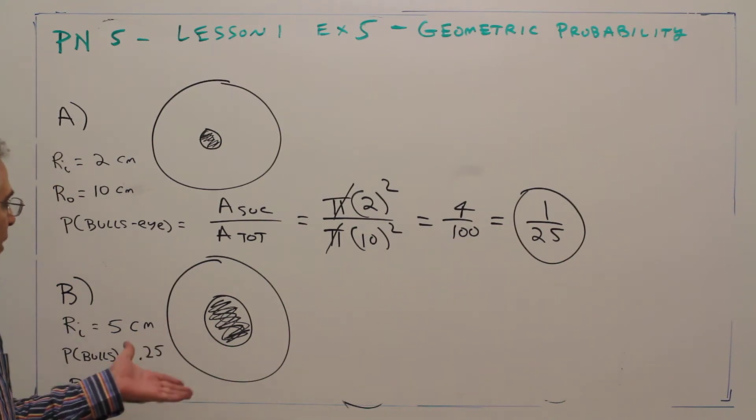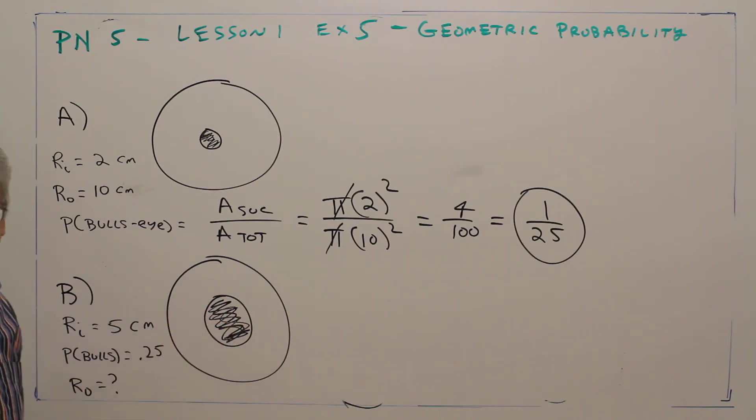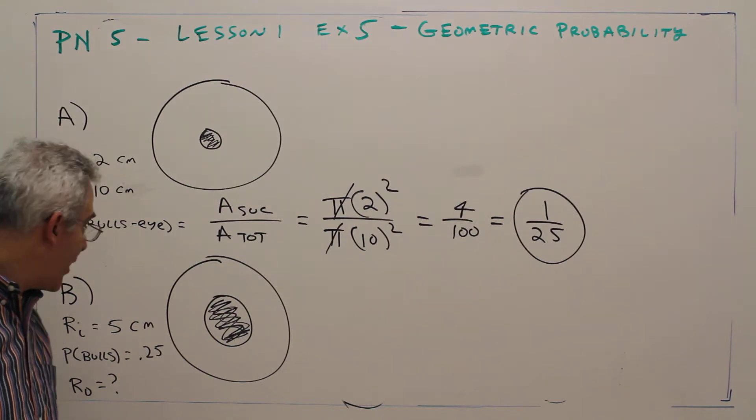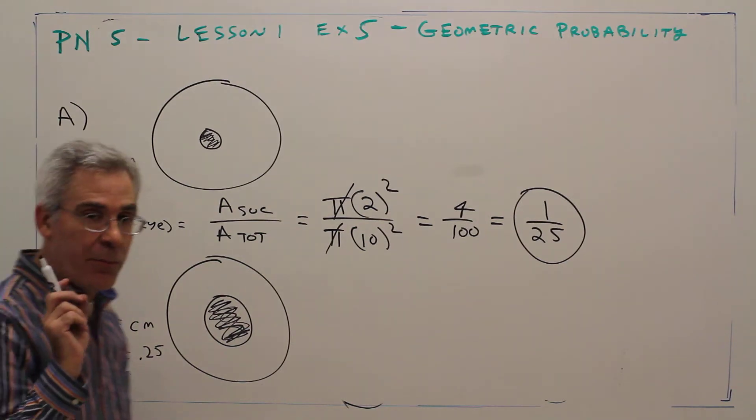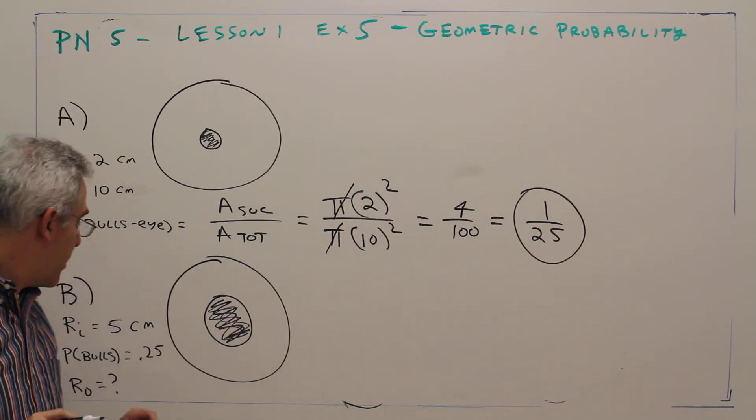The second example. I've got an inner radius of five centimeters. I don't know the outer radius—that's what I'm trying to find. But I do know that the probability of hitting a bullseye is 0.25.